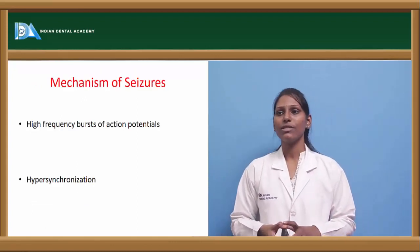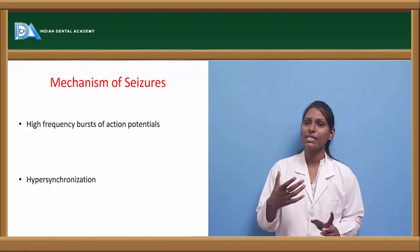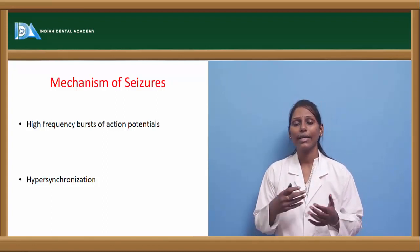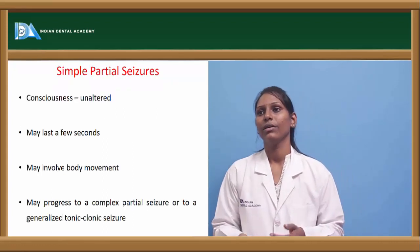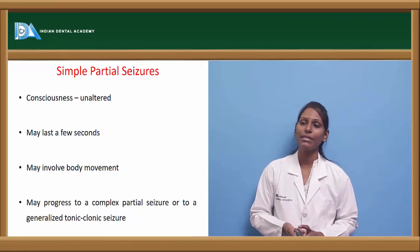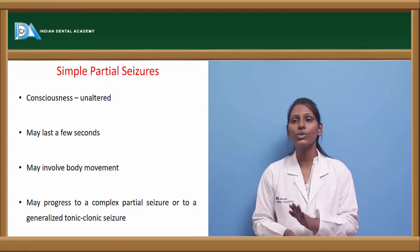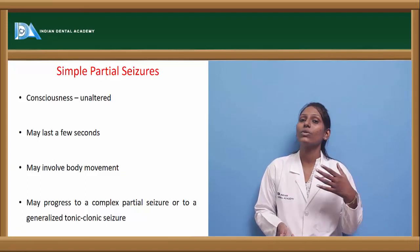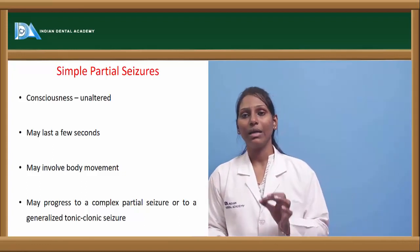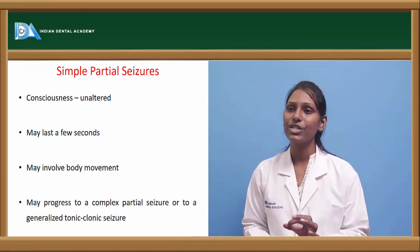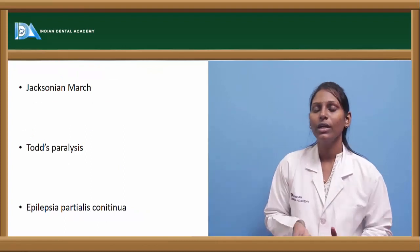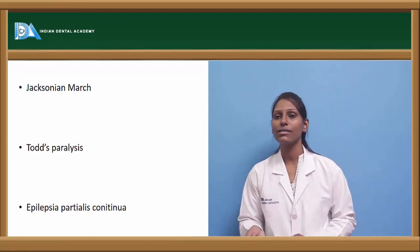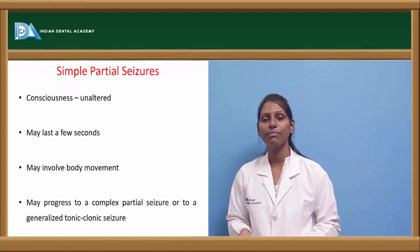Coming to the mechanism of seizures, they manifest as high-frequency bursts of action potentials and hypersynchronization. In simple partial seizures, consciousness is unaltered — patients are usually conscious. This lasts only for a few seconds and involves bodily movement. It may progress to complex partial seizure or generalized tonic-clonic seizure. Pathognomonic features of simple partial seizures include Jacksonian march, Todd's paralysis, and epilepsy partialis continua.